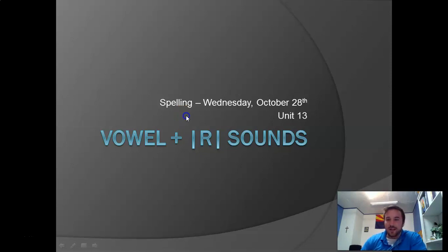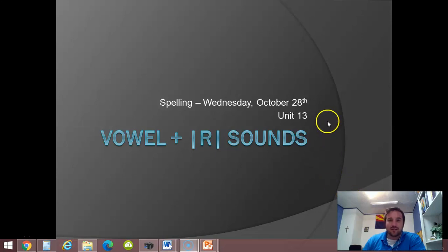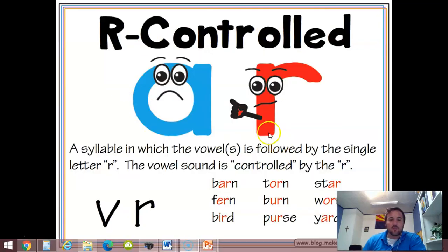Good morning on this Wednesday, great to have you, great to see you back here. We're going to review the R-controlled words. That's AR, OR, IR - really with every vowel.